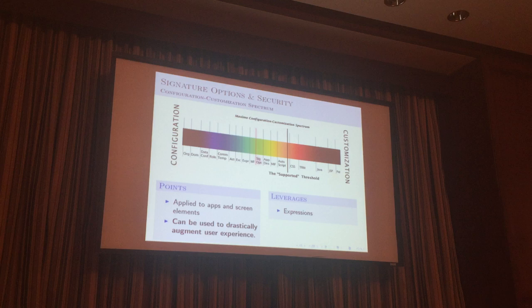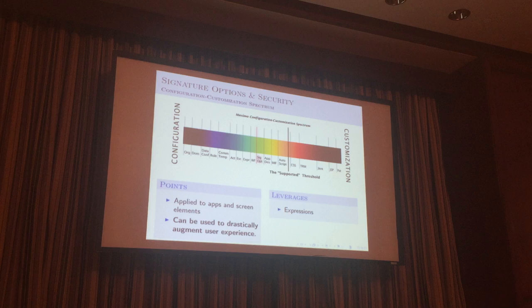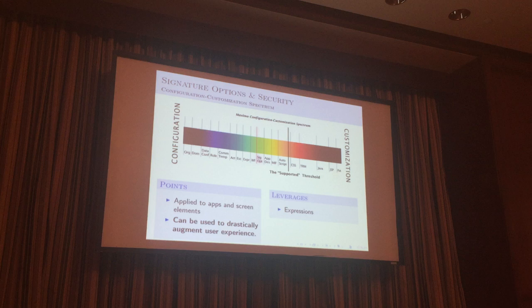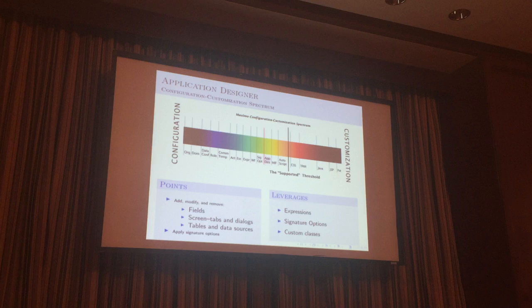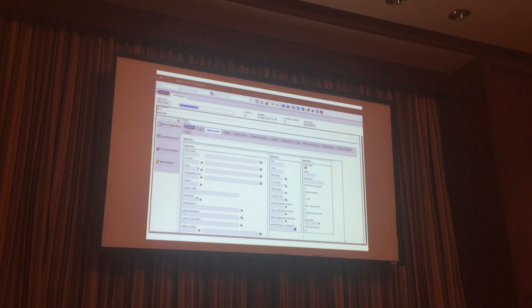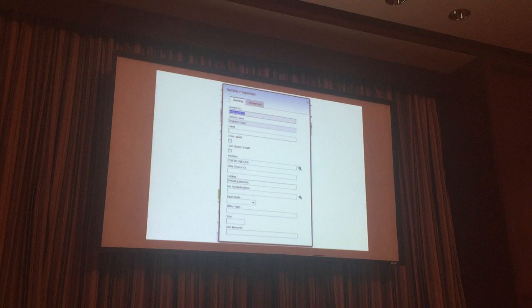Signature options — we have one customer where we're pulling another part of a separate Maximo instance into our Maximo instance. We want to make sure they can see their same screen. So we're using signature options to show one worker tracking screen for one customer and another for the other. It's based on security. You can basically change what the screen looks like dramatically without having to do any customization. Application Designer is where you can go in and construct your applications — your widgets, your text box controls. Also useful if you're ever wondering where dialogs go.